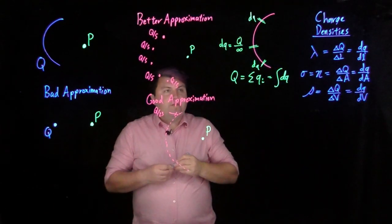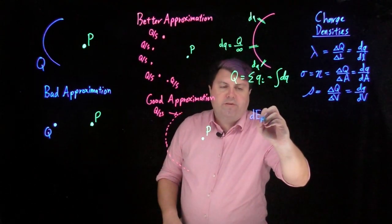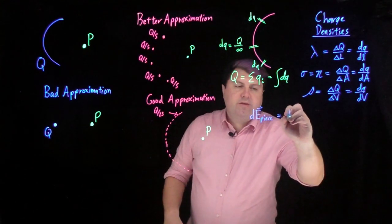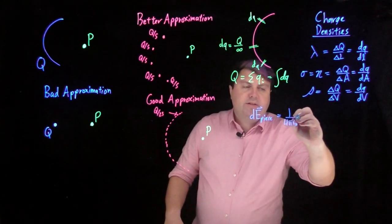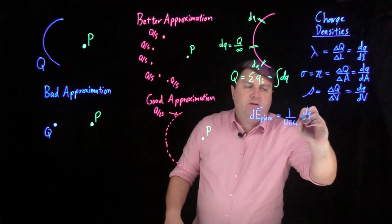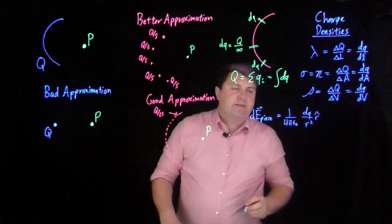So how we solve these is if we had a differential electric field of a piece, this would still be the 1 over 4 pi epsilon naught, or k, but instead of q, it would be dq. And instead of r, well, it still stays r, and r hat stays the same.